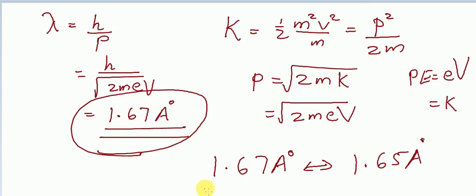The same experiment was repeated with neutrons and the same result was obtained. So the wave nature of matter is proved to be a universal phenomenon. Here we learned about the Davisson-Germer experiment, which is used to prove the de Broglie concept of matter waves. Thank you, students.